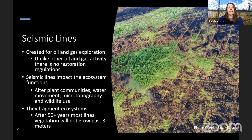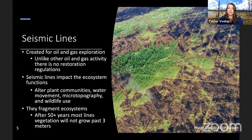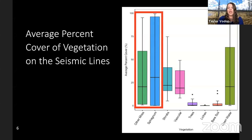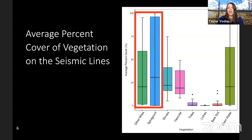Unlike other oil and gas activities, there are no regulations on restoring these seismic lines, because they thought they would naturally restore on their own. But 50 to 60 years later, some vegetation has a hard time re-establishing on these lines. When we look at the average percent cover of vegetation on the seismic lines at my site, we see a lot of sphagnum and other mosses, but not many trees and lichen. That's really detrimental to caribou because these seismic lines act like corridors or highways that predators like wolves can use to chase their prey.